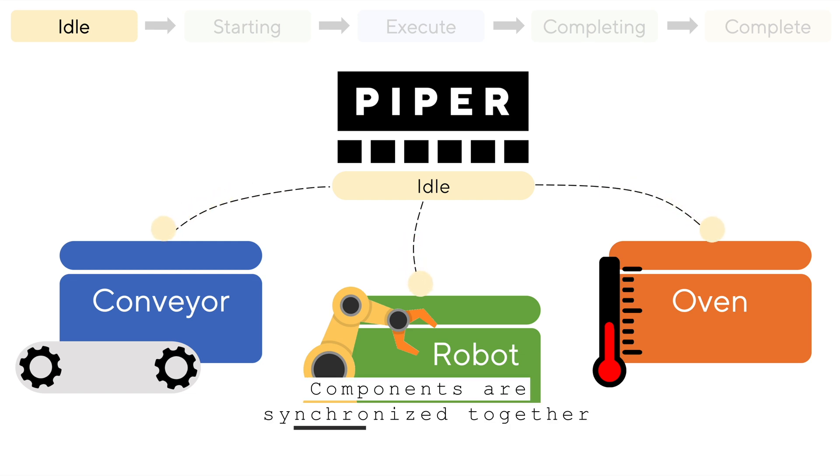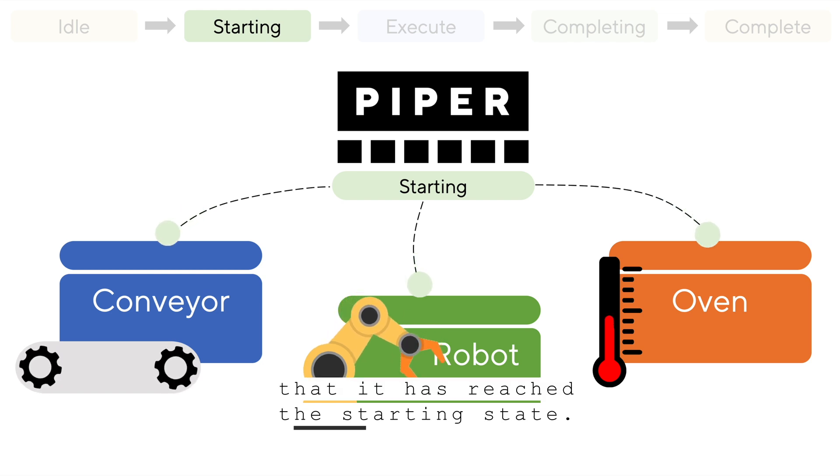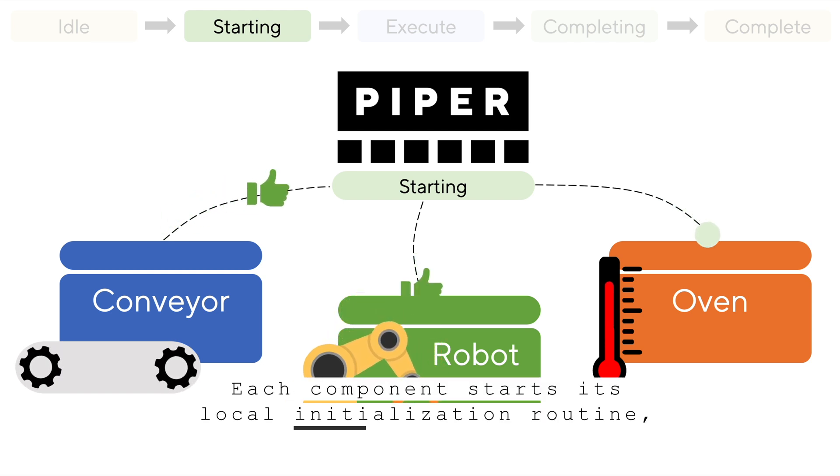Components are synchronized together by reading the same broadcast. Per the PACML standard, Piper now requires an explicit start command to progress to the next state, which could come from a physical pushbutton here. It then informs all components that it has reached the starting state. Each component starts its local initialization routine, and lets Piper know when it's done.